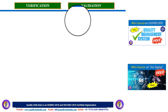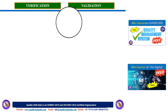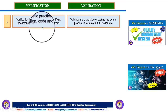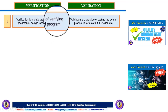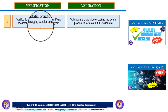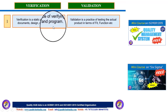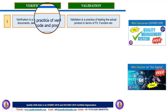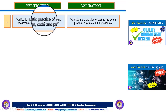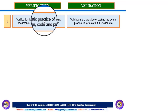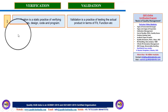We are going to cover six key differences between verification and validation. The first difference: verification broadly talks about a static practice — verifying documents, design code, and programs. In a manufacturing process, we generally verify the product with reference to some standard, SOP, work instruction, or control plan, and we check dimensions or measure features to confirm they fulfill the customer's or design requirement. That is verification.